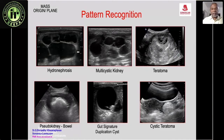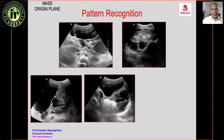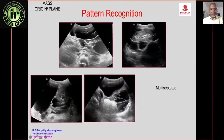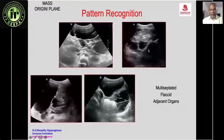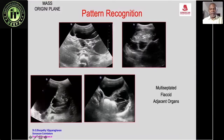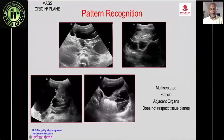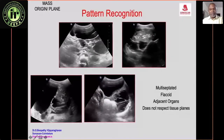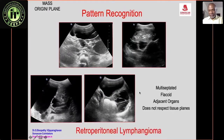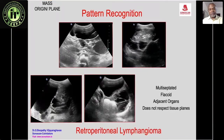Here are four images of a multiloculated cyst that is compressible and flaccid, with no effect on adjacent organs. It goes around structures with acute angles, not respecting tissue planes. You can see it wrapping around the colon. This is the typical appearance of a retroperitoneal lymphangioma — again, pattern recognition.